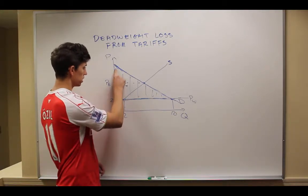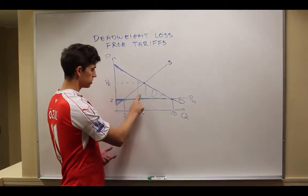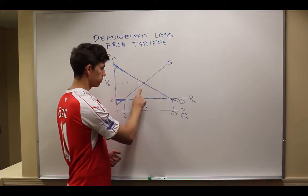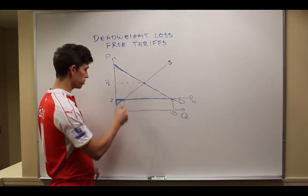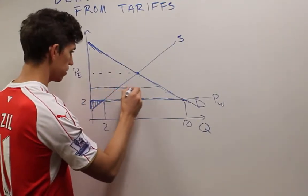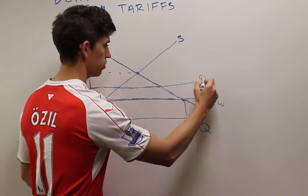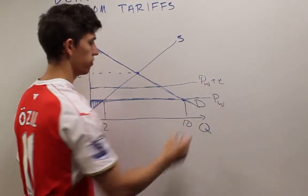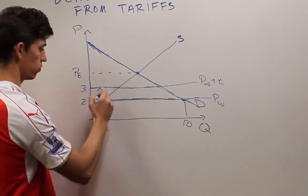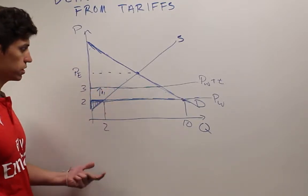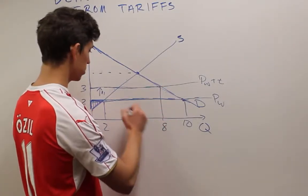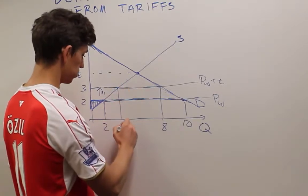Now let's suppose that the government decides that to protect domestic industry they want to put a tariff on the import of this good. Let's say they put a $1 tariff on. This becomes the price in the world plus a tariff. This is just a $1 tariff, so this shifts this curve up by $1. What's the new producer and consumer surplus? Let's say they consume 8 units and domestic producers produce 4.